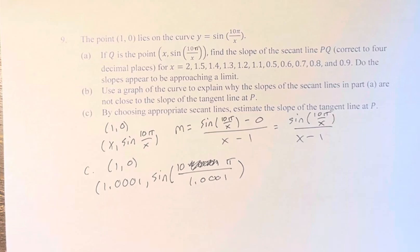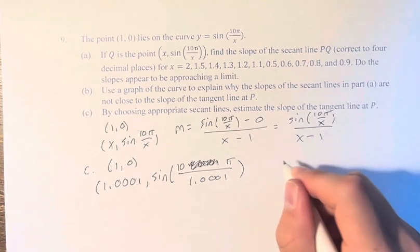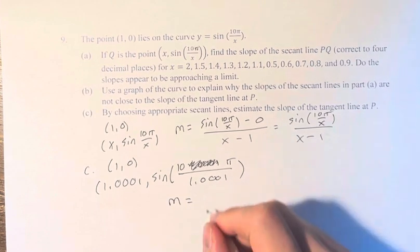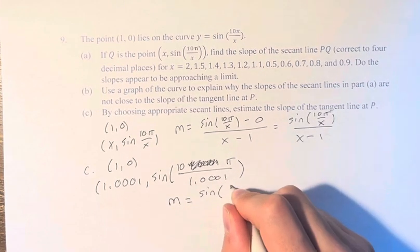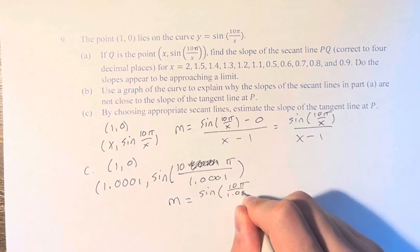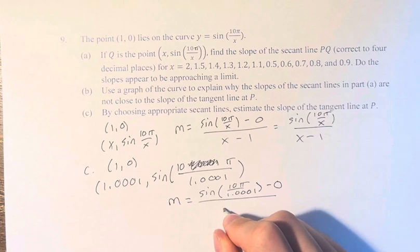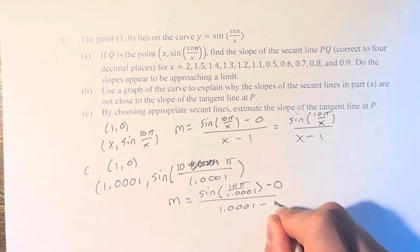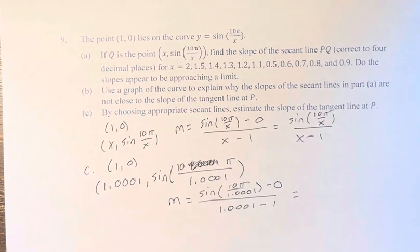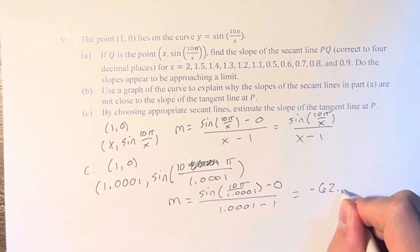And if we do this calculation, we get that this is equal to the slope: sin(10π/1.0001) minus 0, over 1.0001 minus 1. This calculation will get us negative 62.8.